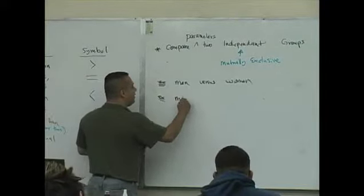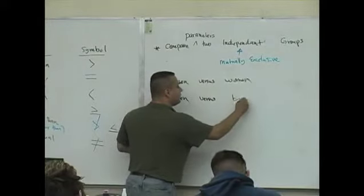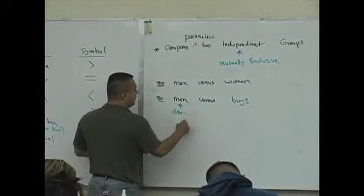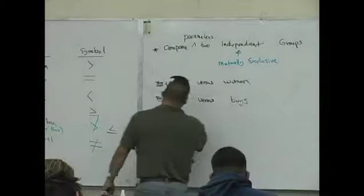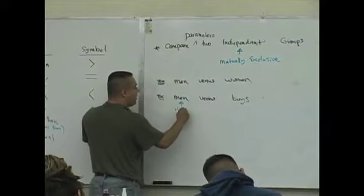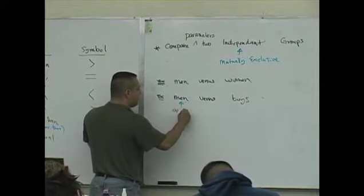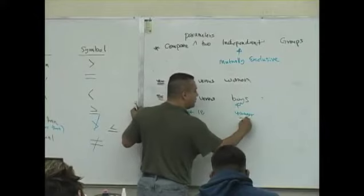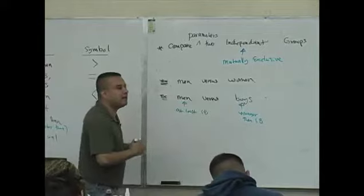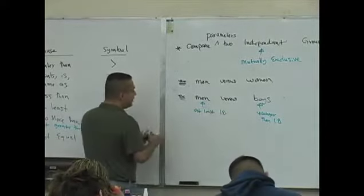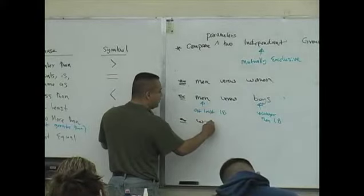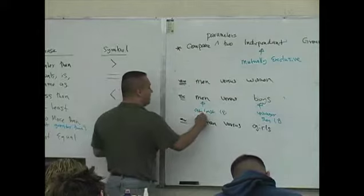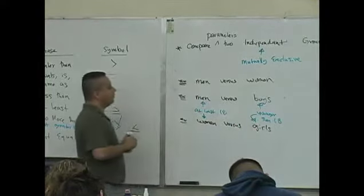Another example is you can compare men versus boys. Men being, I guess, guys older than, or at least 18, you could think of it. You could define it any way you like, but it should make some sense. Older than, well, I'm going to say at least 18. And boys, you can say, are younger than 18. So these are two mutually exclusive groups. You're not going to find a single guy who's going to be on both lists. Similarly, women versus girls. And it's the same sort of thing that women are at least 18 or they are younger than 18.